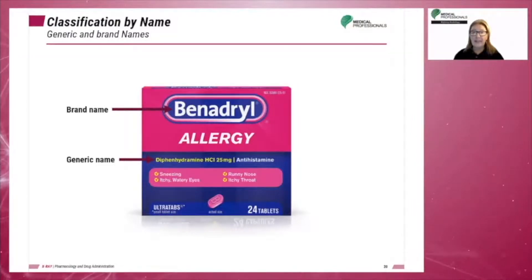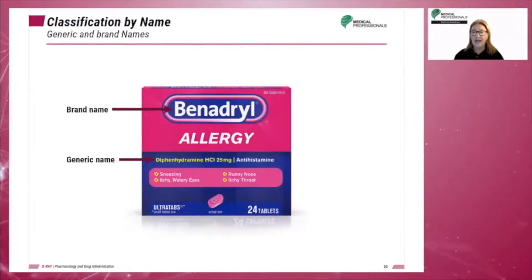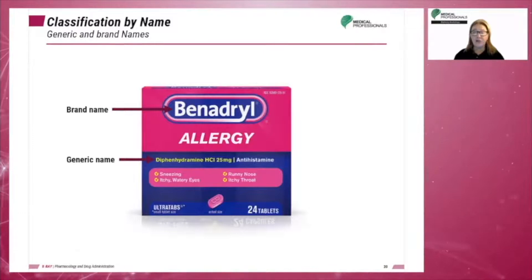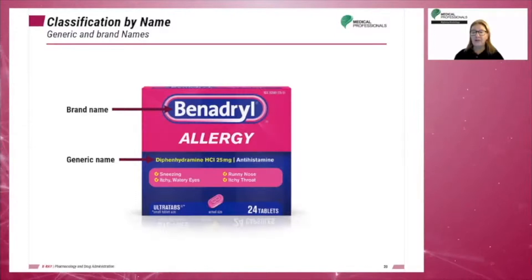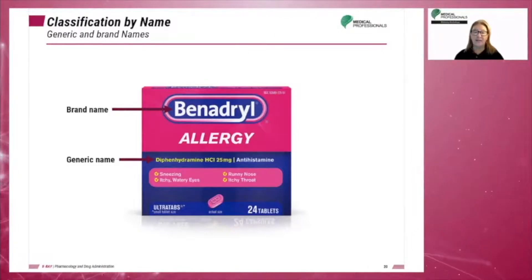Each company can select its own brand name, so the same drug can have different brand names. Many drugs have similar trade names, so it is critical to know the exact name and spelling of the drug you are working with. For example, ibuprofen is the generic name for both Motrin and Advil — they are the brand names and both have the same active ingredients.